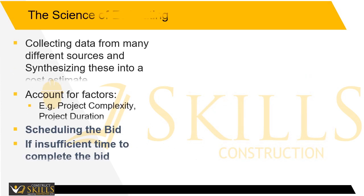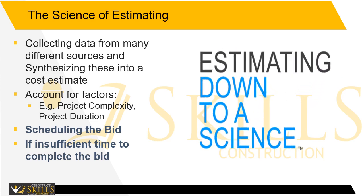The science of estimating. Estimating is a process of collecting data from many different sources and synthesizing these into a cost estimate. The estimator must take into account factors such as historical estimates versus actual costs, subcontracted bids related to the proposed scope of work, current and historical prices for materials, and job-specific requirements related to wages or materials.